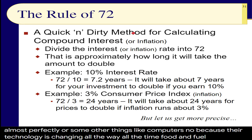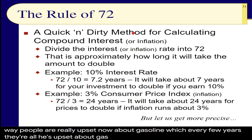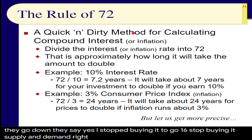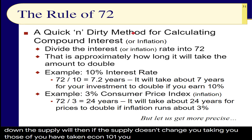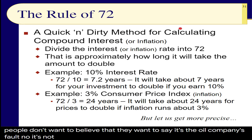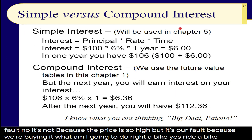Cars follow inflation almost perfectly. Food and fuel are very volatile. People are always upset about gasoline every few years. Want the price of gasoline to go down? Stop buying it. Supply and demand — you stop buying it, demand goes down, and if supply doesn't change, prices fall. People don't want to believe that; they say it's the oil company's fault. But it's our fault because we're buying it. Ride a bike.